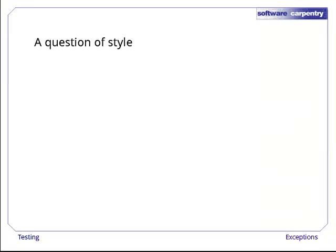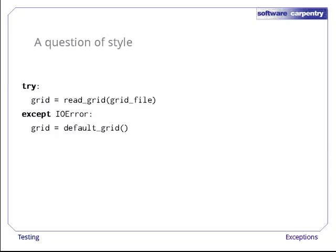So much for how exceptions work. How should they be used? Some programmers use try and except to give their programs default behaviors. For example, if this code can't read the grid file that the user has asked for, it creates a default grid instead.